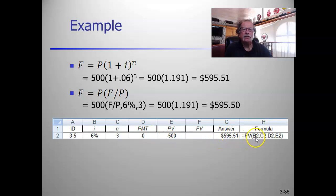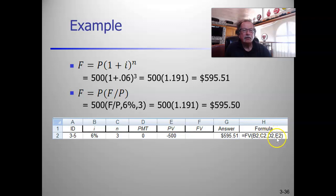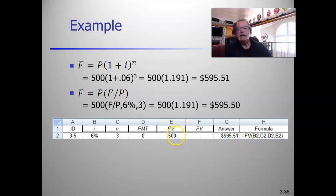B2 is the interest rate at 6%, C2 is the number of periods, D2 is zero for the payment, and E2 is the present amount. Note that it flips the sign: we put in negative 500, and it comes back with positive 595.51.